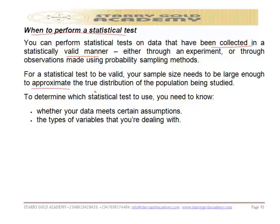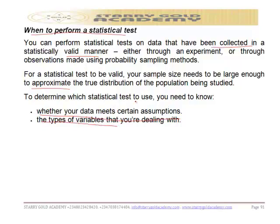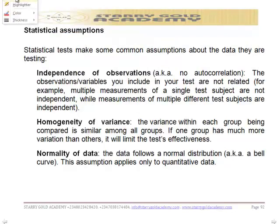To determine which statistical test to use, you need to know whether the data meets certain assumptions, and also you need to know the type of variable that you are dealing with. Statistical tests make some common assumptions about the data they are testing. The first assumption is independence of observation, which is related to autocorrelation — there should be no autocorrelation.